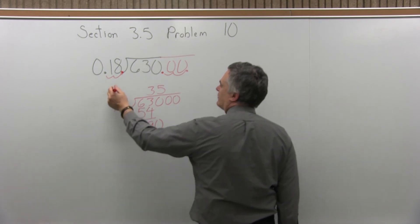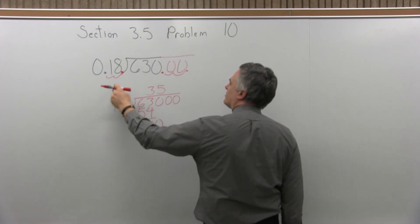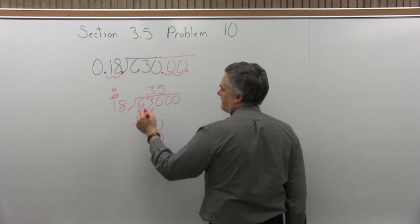Write the 0 from the 40, carry the 4. 5 times 1 is 5. 5 plus the 4 more that I carried over, 5 plus 4 is 9. So it does match very nicely.